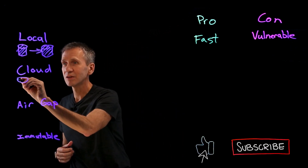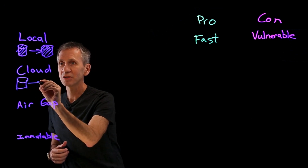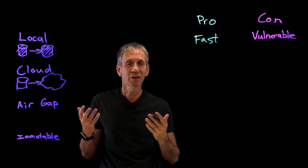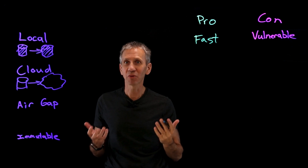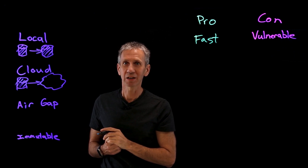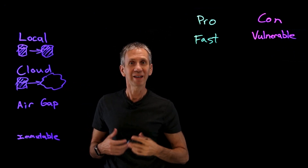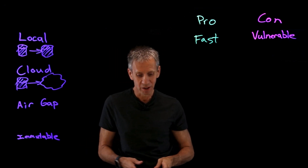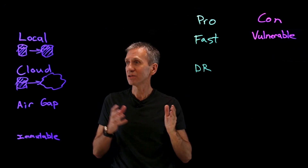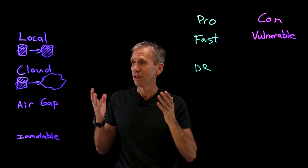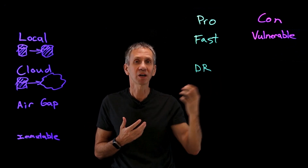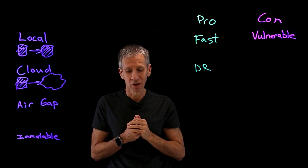The next approach is a cloud-based backup. In this case, I've got my local data and I'm going to send it off to some cloud-based storage. I don't really know where it is, and I don't care. But the fact of the matter is the data is someplace else, so that when this gets encrypted, as long as I have multiple copies back here, it doesn't automatically encrypt elsewhere — it's not part of the locally attached file system. So I have an advantage here of disaster recovery. If my system goes down, gets burned up in a fire, or there's some sort of natural disaster, I also have the ability to recover from the cloud.